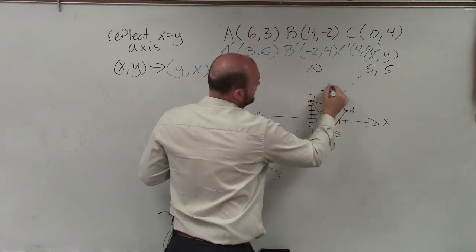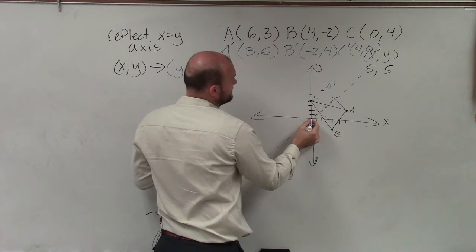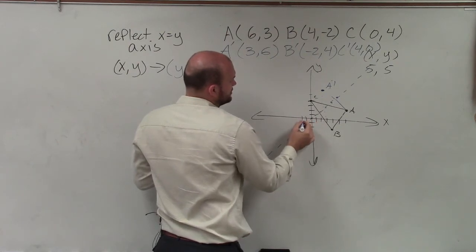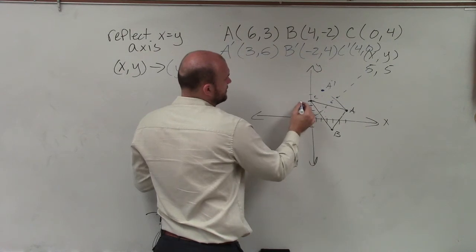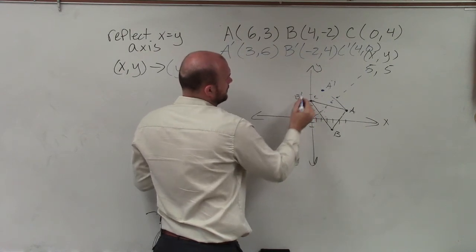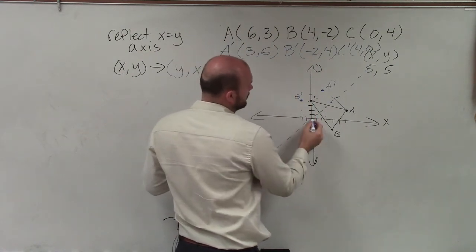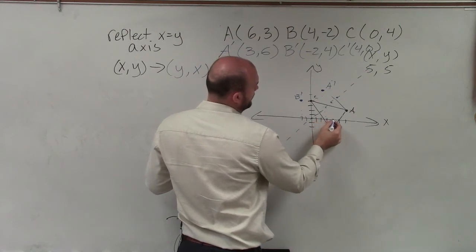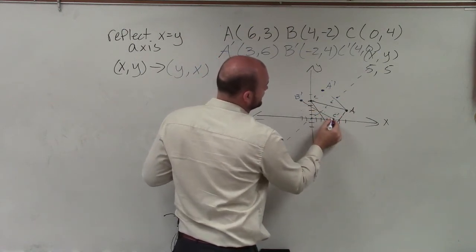B prime is going to be at negative 2, up 4. And then C prime is now at 4 comma 0. And now I can just connect these.